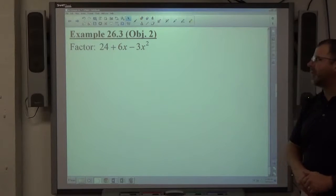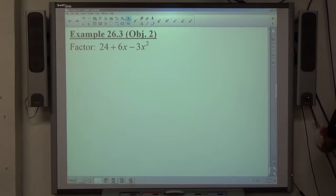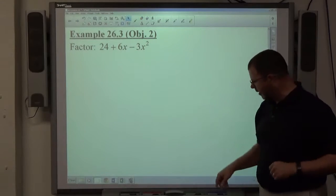Okay, example three: factor 24 + 6x - 3x². Notice it's in ascending order this time. It goes from constant up to the quadratic term.